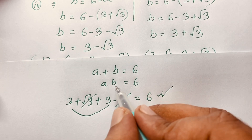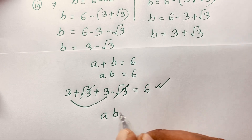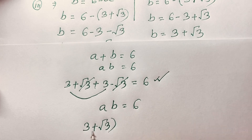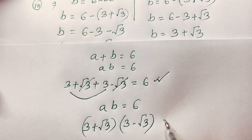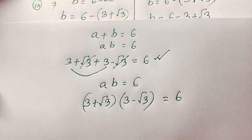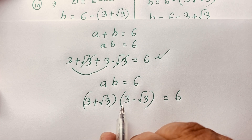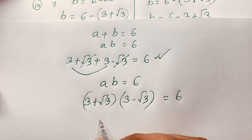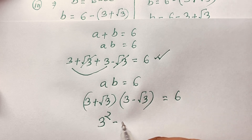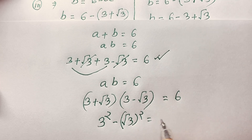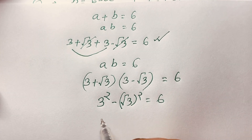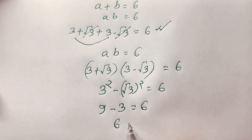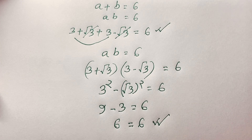For our other equation, A times B equals 6: A times B is (3 plus square root of 3) times (3 minus square root of 3) equals 6. Using the identity (A+B)(A-B) = A² - B², it becomes 3 squared minus (square root of 3) squared, which is 9 minus 3, equals 6. So 9 minus 3 equals 6, and left-hand side equals right-hand side. Our final answer to this math Olympiad question is (A, B) equals these two solution pairs.